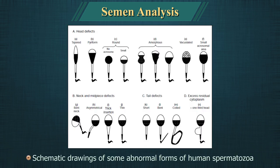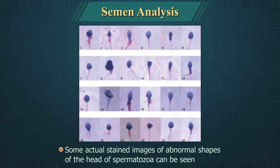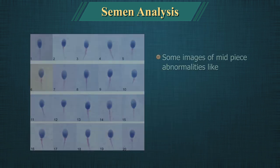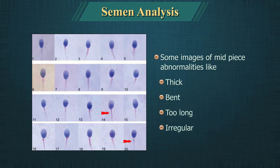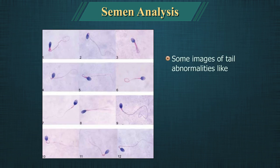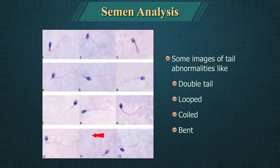Here you can see a schematic drawing of some abnormal forms of spermatozoa, and actual stained images of abnormal shapes of the sperm head. Some images of midpiece abnormalities are shown, including thick, bent, too long or irregular midpieces. Some images of tail abnormalities are also shown, such as double tail, looped, coiled and bent tails.